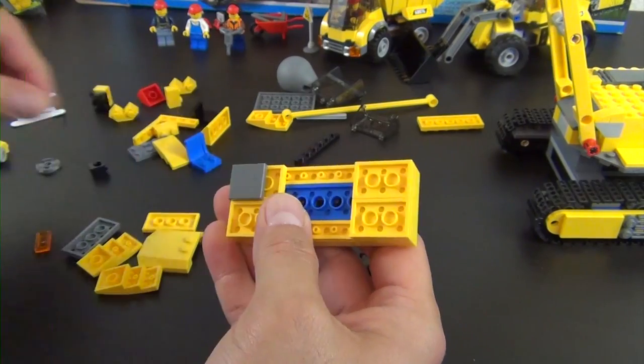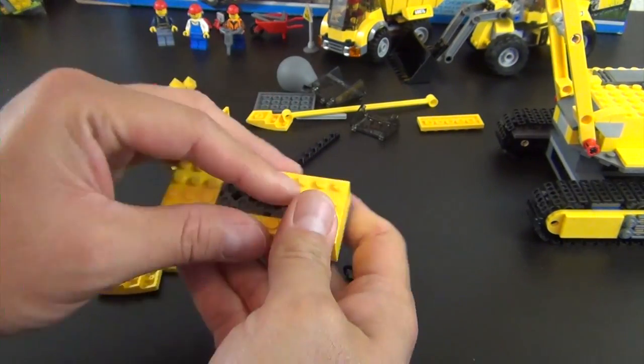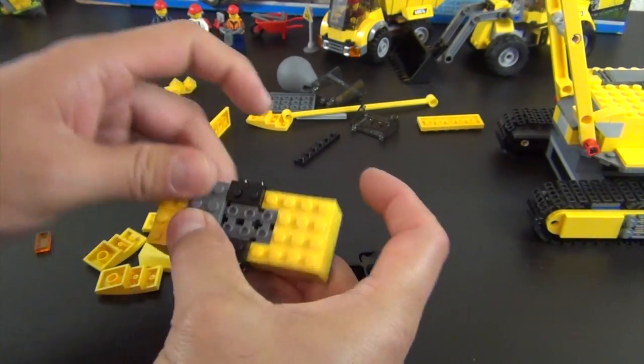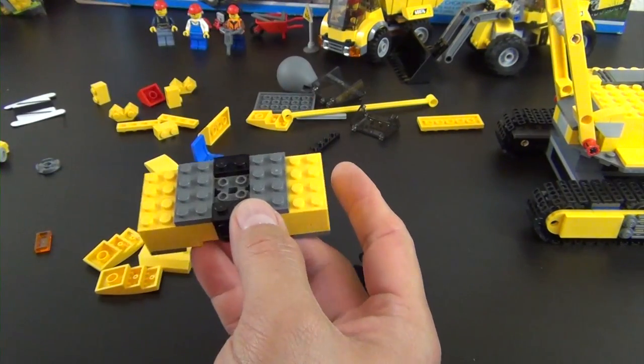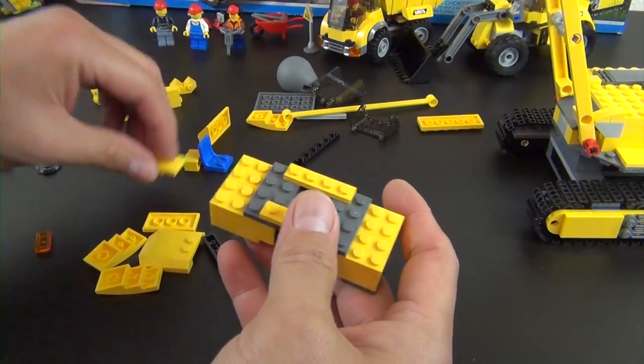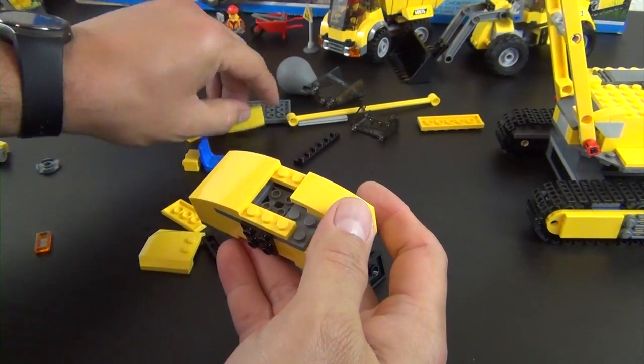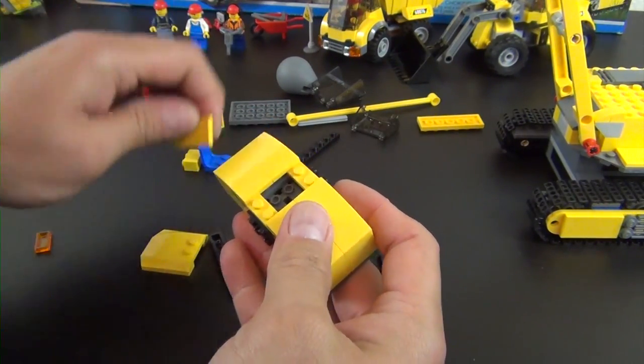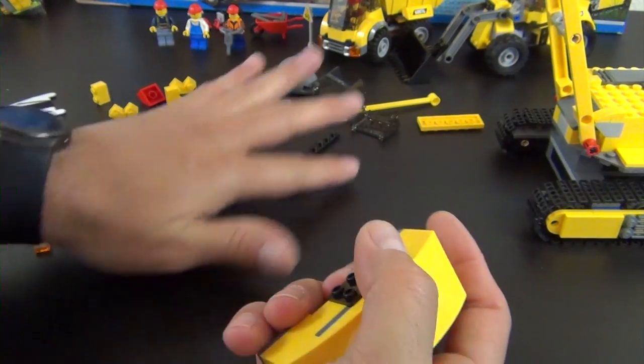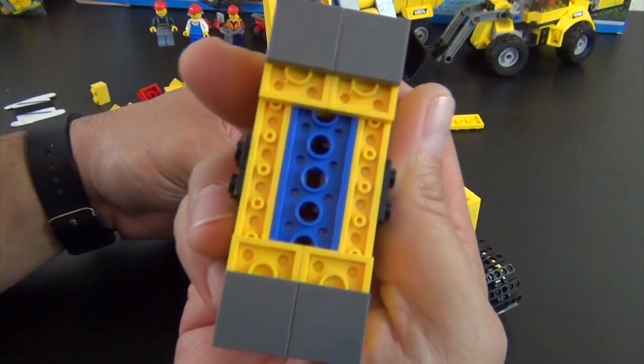Turn it over, we have these anti-studs tiles. Turn it back around, we have a couple of brackets. Some plates, two more plates, two more plates. These long sweeping curved pieces with a tile right there.